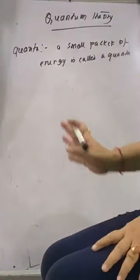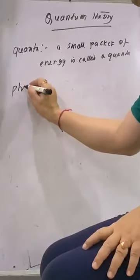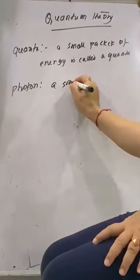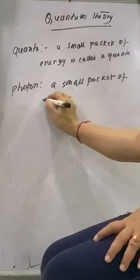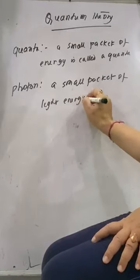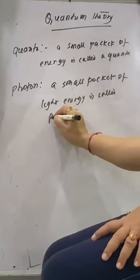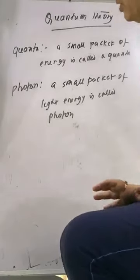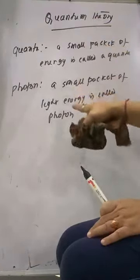So once you have Quanta to be discussed over here, similarly there is like a photon also. When you specify photon, that means we are specifying the case of light energy. A small packet of light energy is called photon. So we differentiate the whole thing into two parts over here. A small packet of energy is called Quanta, whereas a small packet of light energy is called photon. That is the basic difference between the two.